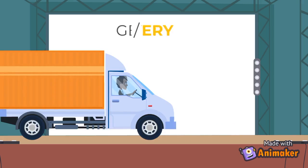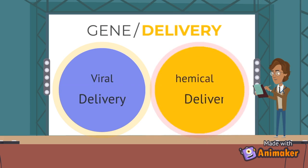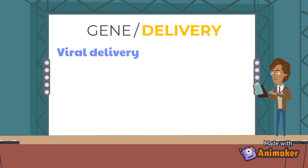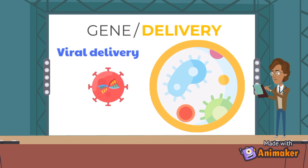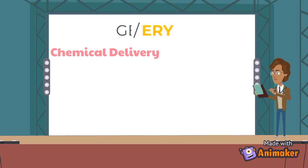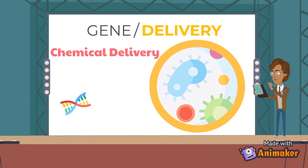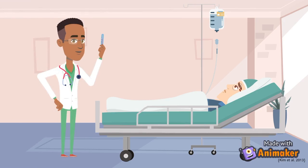The last method we are going to talk about is gene delivery. It has two forms: viral delivery and chemical delivery. Viral delivery uses a virus to transfer DNA through the cell wall, which changes the DNA and enables the replication of the new DNA. Chemical delivery uses a gene gun or electroporation instead of the carrier to directly transfer DNA into the cell. Gene delivery is best used as a means of gene therapy.